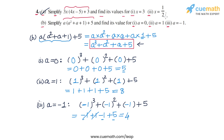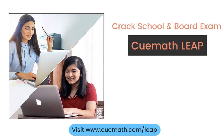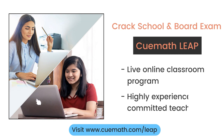For part b, the three values of the expression for the given values of a are 5, 8, and 4. This completes part b and question number 4. To learn more about how Q Math can help you crack school and board exams, explore Q Math Leap, a live online classroom program run by highly experienced and committed teachers.